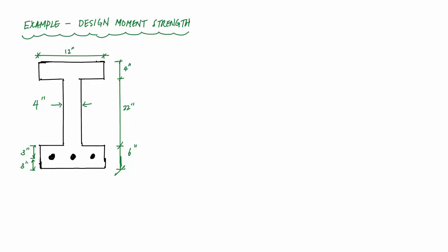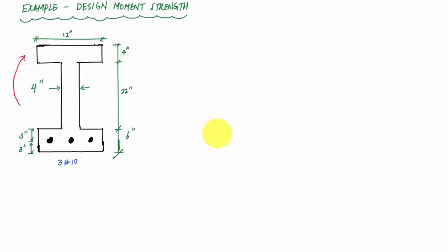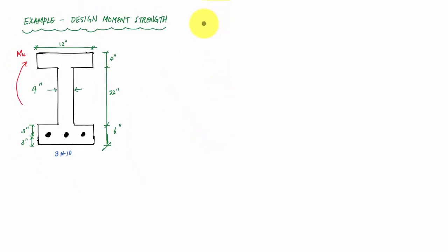Welcome back to Structure Free Learning. In this video we're going to do an example problem calculating design moment strength of a funky I-shape section which has a flange at the top that's 12 by 4, a web that's 22 by 4, and a bottom flange that's 12 by 6. This section is reinforced with three number 10 bars on the tension side. We'll assume an applied moment causes compression at the top. We want to calculate the design moment strength φMn, knowing the concrete compressive strength is 4 KSI and we have grade 60 steel.